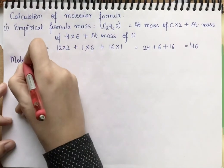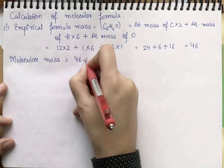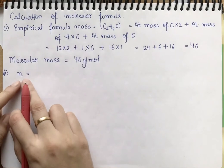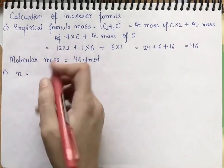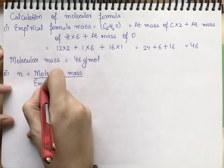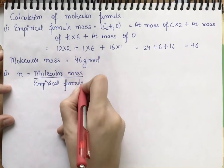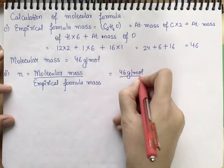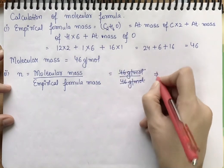The molecular mass given is 46 g/mol. Now we find n: n = molecular mass ÷ empirical formula mass = 46 ÷ 46 = 1. So n = 1.